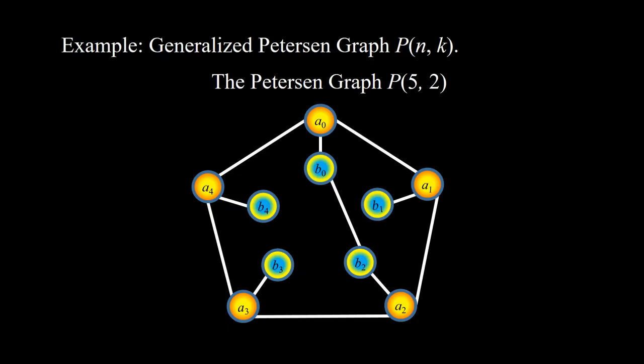For P(5,2), because K is 2: B0 and B2 are adjacent, B1 and B3 are adjacent, B2 and B4 are adjacent, B3 and B5 modulo 5 — that is B0 — are adjacent, and B4 and B6 modulo 5 — that is B1 — are adjacent.